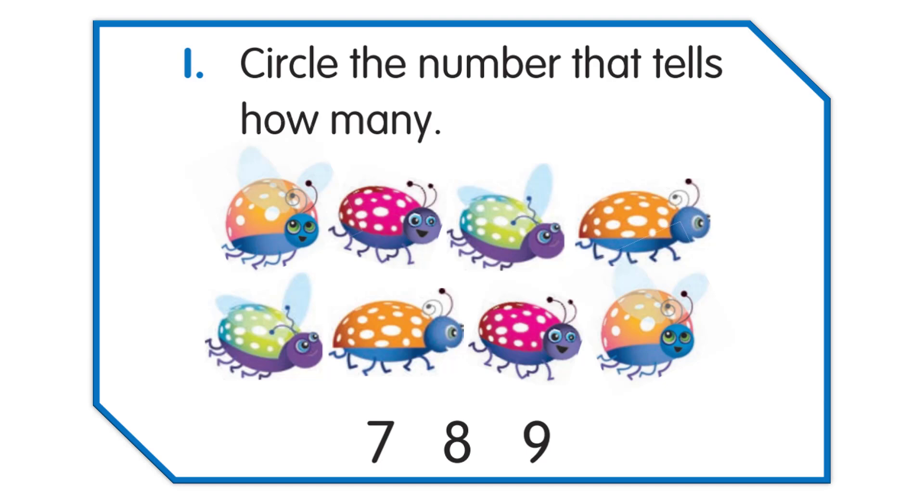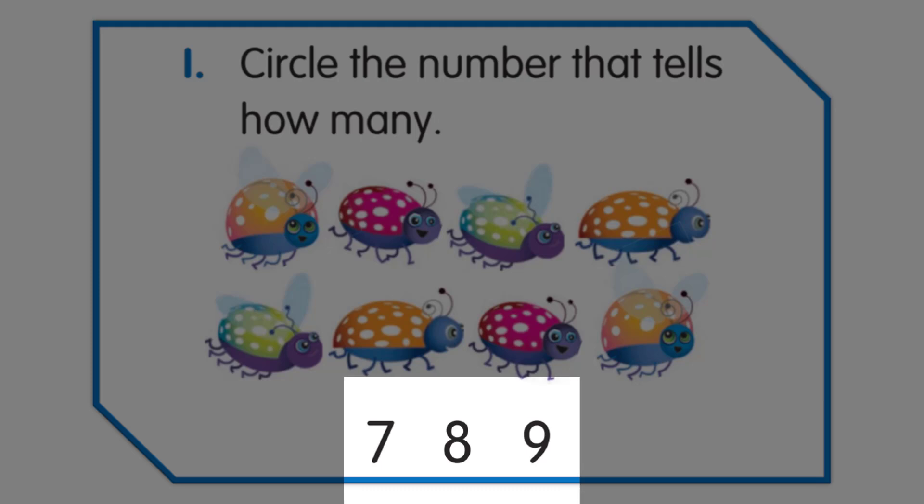So how many objects on this screen? You have to circle the number that tells how many. On the bottom, 7, 8 and 9 are written.